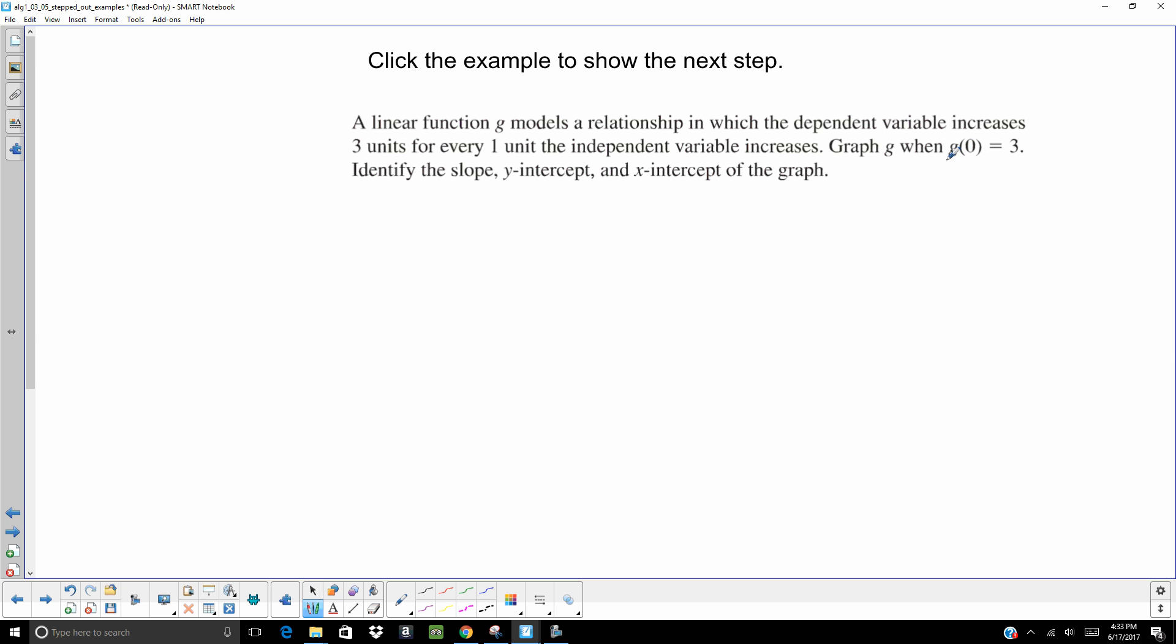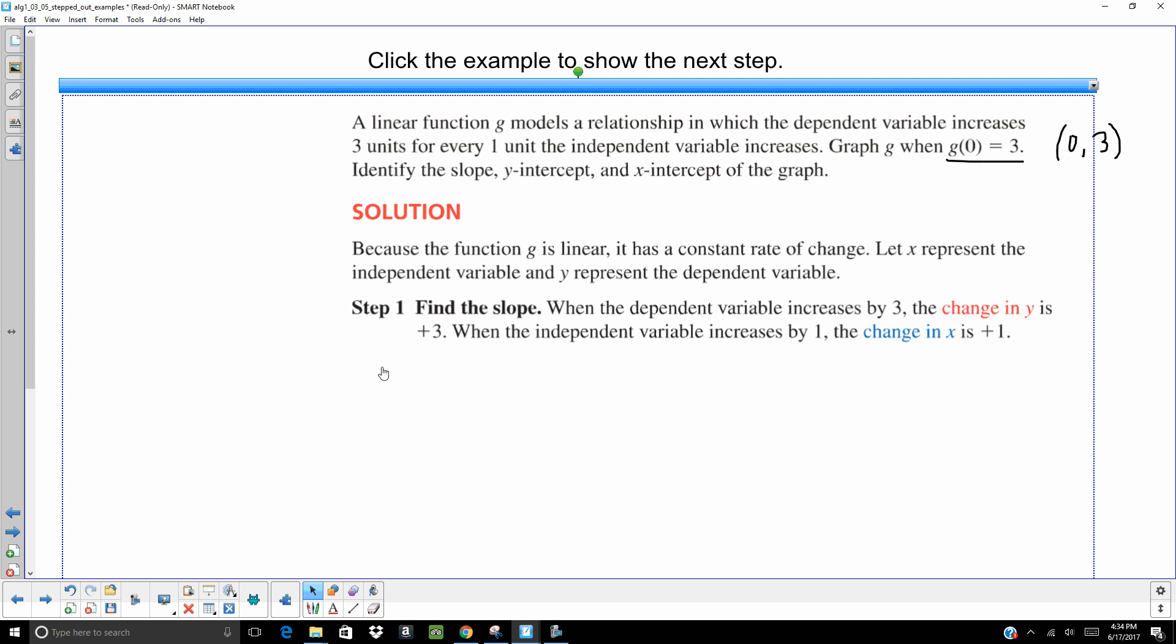Well, I would start with this piece of information right there. That's like an ordered pair, 0, 3. And then the dependent variable increases 3 units for 1 unit. The independent variable increases. Well, x is typically your independent variable. Y depends on x, so that is your dependent variable. So when the dependent variable increases by 3, the change in y is 3. When the independent variable increases, the change in x is 1. So your slope is 3 over 1 or 3. I think that's kind of an awkward way of saying it, but that's something that you should be able to break down. You should know that your independent variable are your x's. Your dependent are your y's.